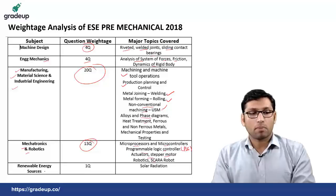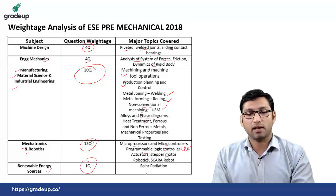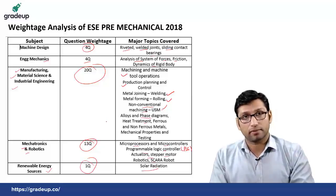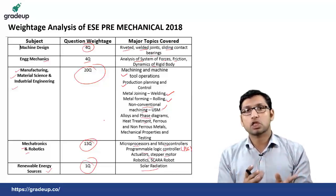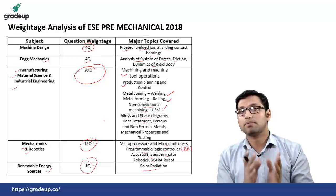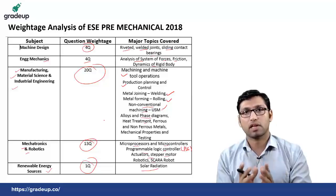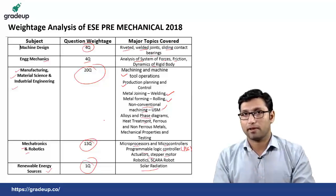From renewable energy resources there was only 1 question in 2018, from the solar radiation topic. This is the weightage analysis of ESE prelims paper 2 for 2017 and 2018 for mechanical engineering.